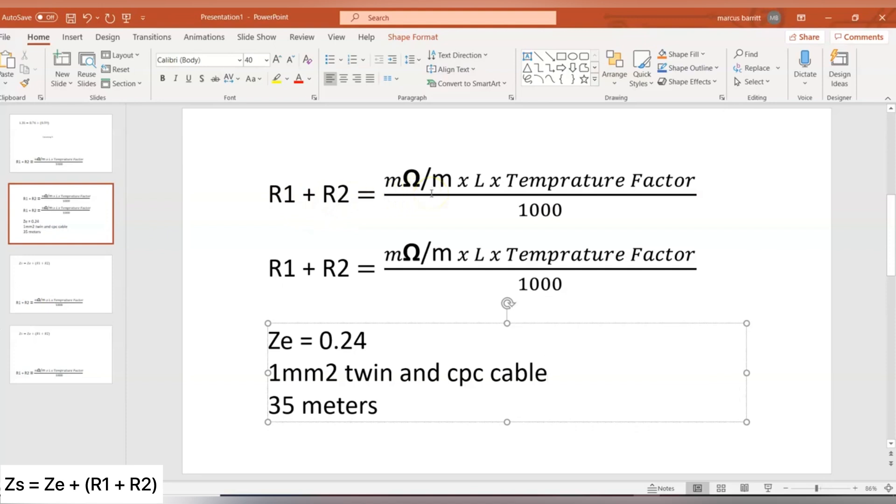So the amount of resistance in a copper or aluminium conductor per metre of that conductor, times by the length, multiplied by the temperature factor, and divided by 1,000.